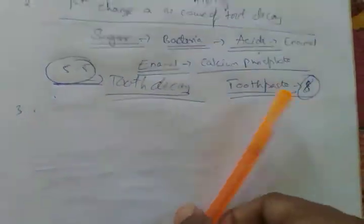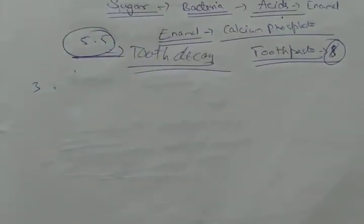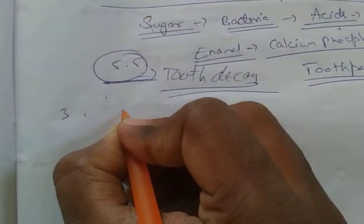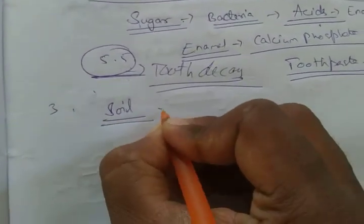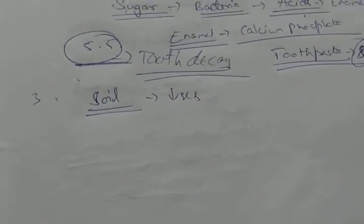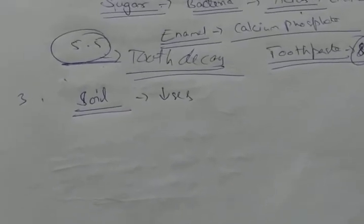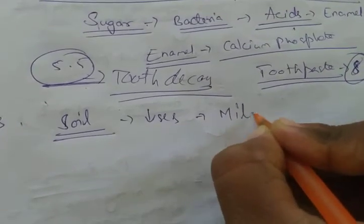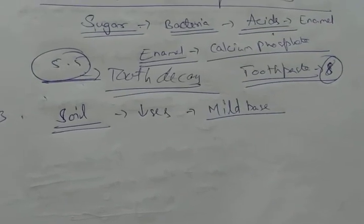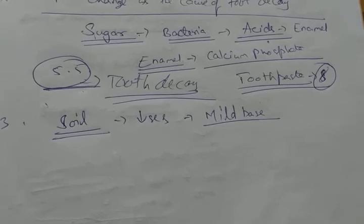Third, pH is very important for our environment - for soil and water. If the pH of soil decreases due to some acidic chemicals from factories, we may use a mild base to neutralize the soil.